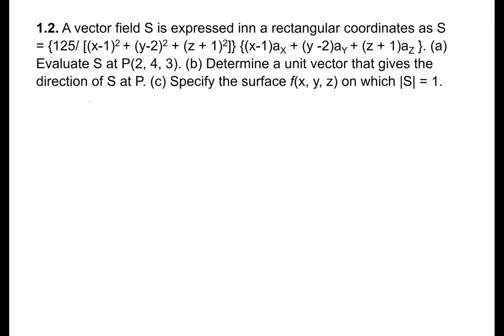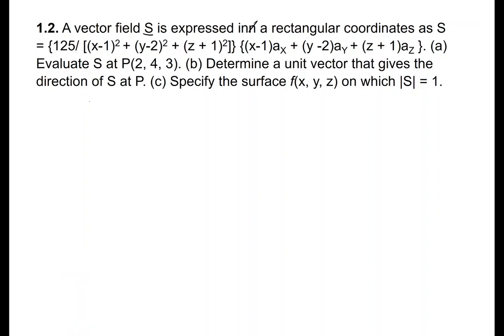This is the second problem of the eight common problems in vector analysis. We have a vector field S expressed in rectangular coordinates. Capital S is equal to 125 over that expression — this is the vector field S.